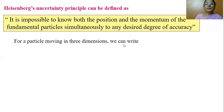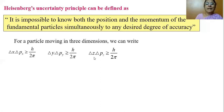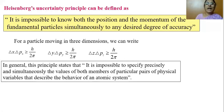For a particle moving in three dimensions, we can write the uncertainty principle as: delta X · delta Px ≥ h/2π, delta Y · delta Py ≥ h/2π, and delta Z · delta Pz ≥ h/2π. In general, this principle states that it is impossible to specify precisely and simultaneously the values of both members of a particular pair of physical variables that describe the behavior of an atomic system. The key words are 'precisely' and 'simultaneously'.